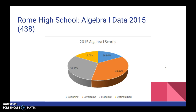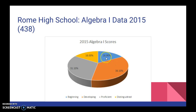In 2015, we had 438 students take the test, with some very close similarities to 2014. The big difference is that we had more distinguished learners at 16%, so that grew a lot that year. Proficient came in at 31%. Developing was still our largest group at 36%, and beginning learners was at 16.9%.